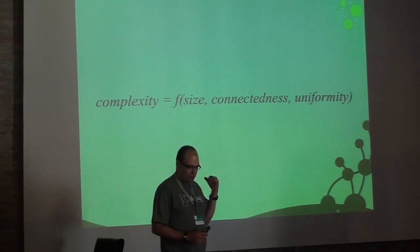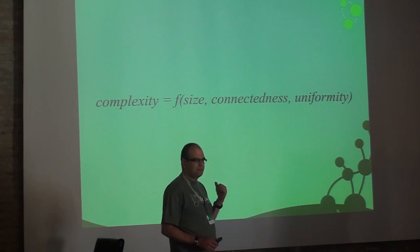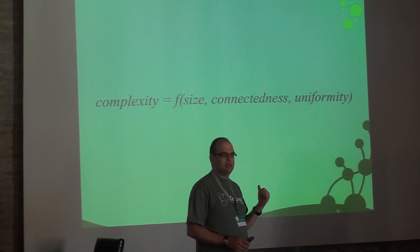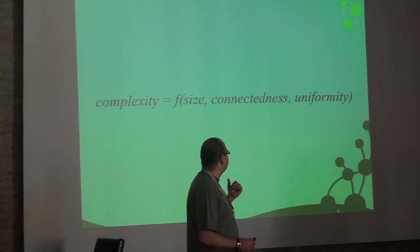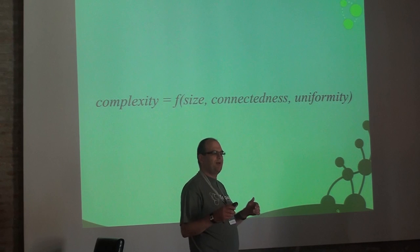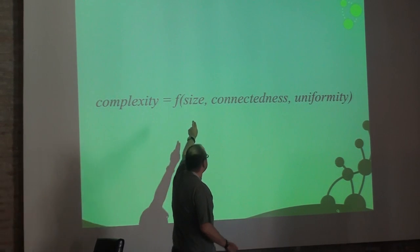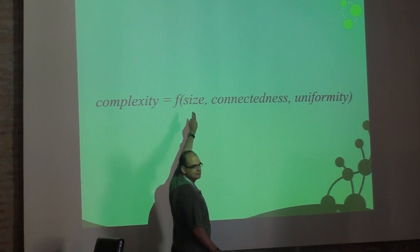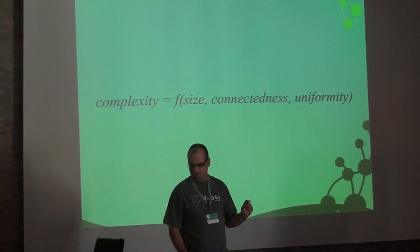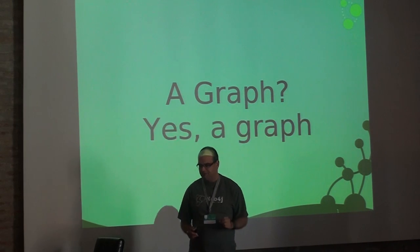Keep this in mind: data complexity is a function of size, connectedness, and uniformity. Most people speaking about big data only focus on size, but that's only one aspect of the picture. Is the solution to handling this complexity a graph?